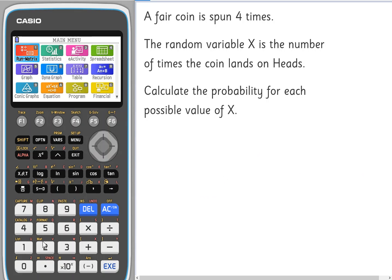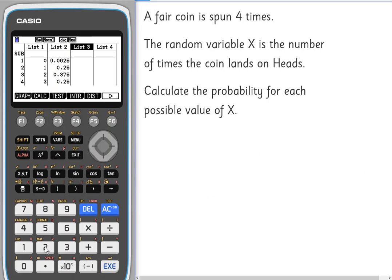So again, from your calculator go into menu item 2, statistics, and we have here the data stored already from the previous video. So the values of X are 0, 1, 2, 3, and 4, and that's in list 1. And in list 2 are the probabilities associated with these values.